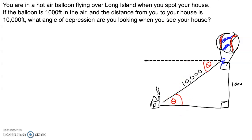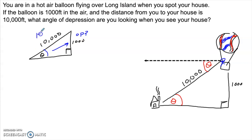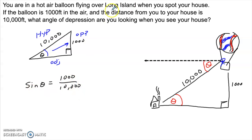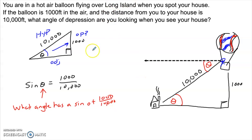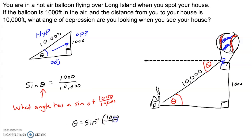We can abstract this to simply a triangle. Starting at the angle, looking across from it gives us the opposite side of 1,000. The hypotenuse is 10,000. With an opposite and a hypotenuse, this is a sine problem: sine of theta equals 1,000 over 10,000. What I need is the angle that has that sine value, so theta equals the inverse sine of 1,000 over 10,000. Hit the second button and then the sine button on your calculator, and you'll get that theta is approximately 5.739 degrees.